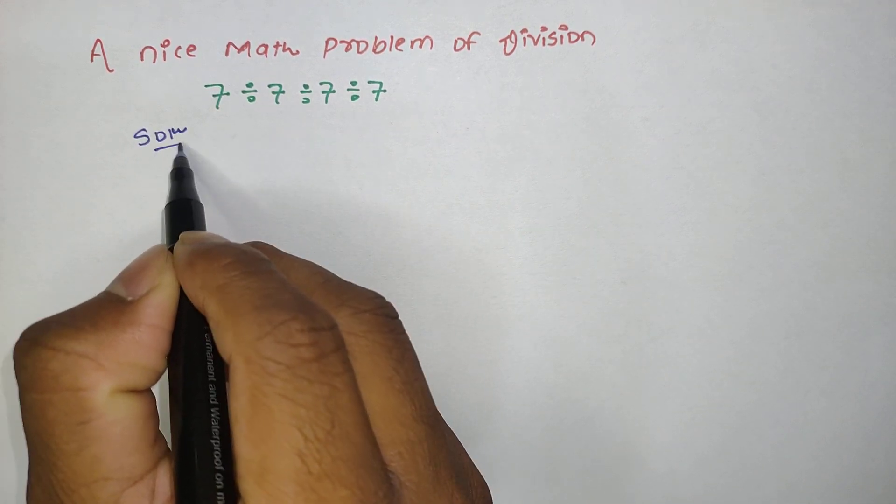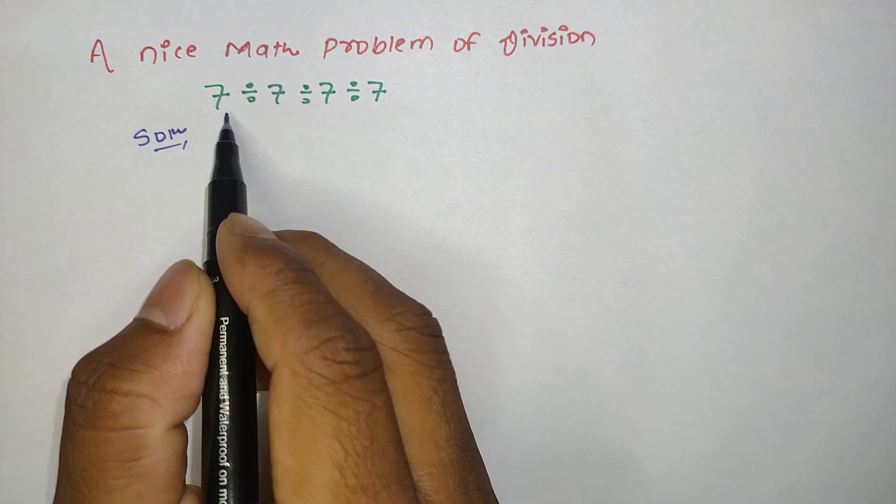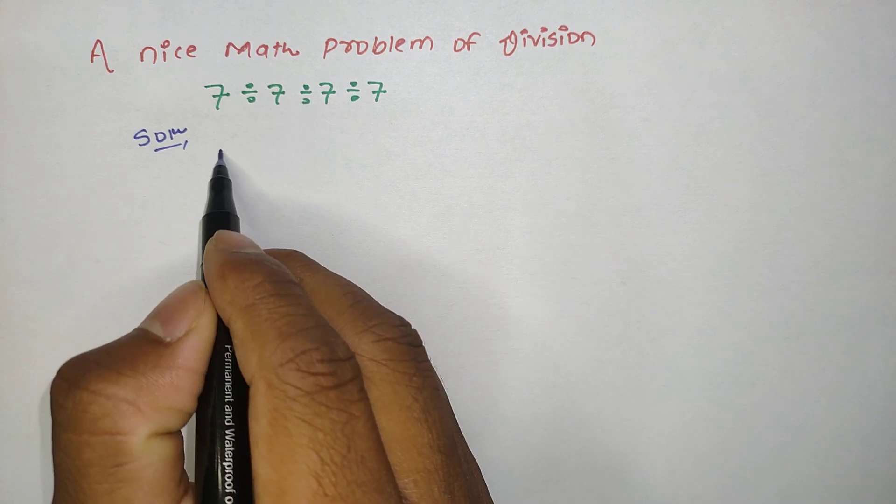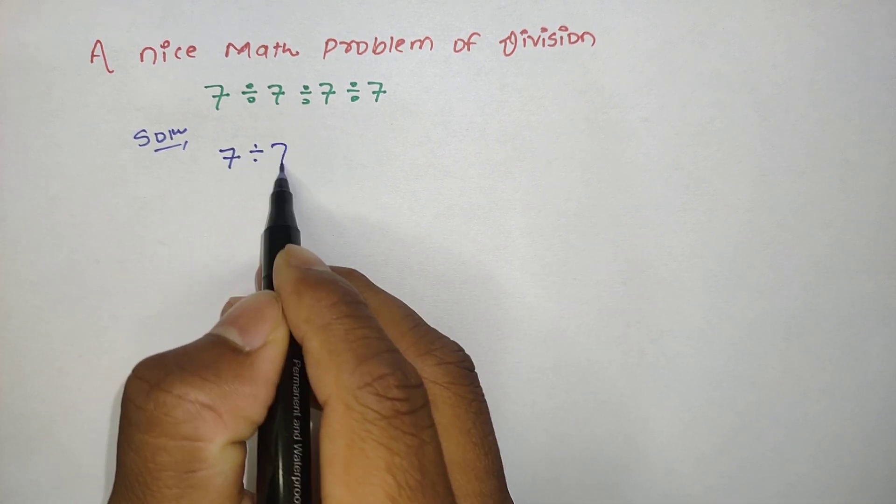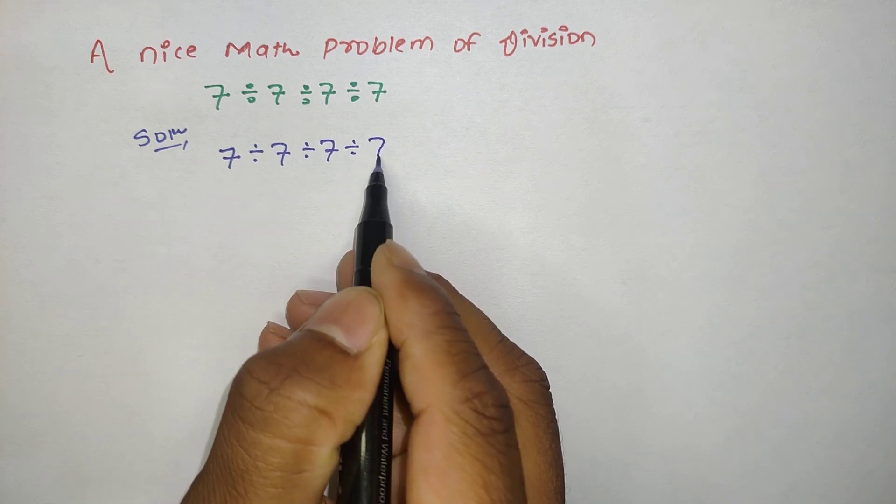So let's dive into the question and find the solution. First of all, we can write our given question: 7 divided by 7 divided by 7 divided by 7.